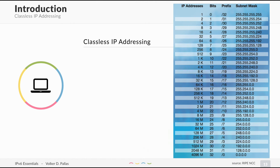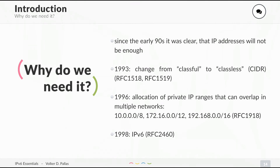Here's an example of IPv4 classless addressing. You can have everything from a slash /32, which is just one single address, to a slash /0, which is the default route because there is not a single bit set for the network mask. Still, why do we need IPv6 if we have classless addressing? Well, since the early 90s, it was clear that IP addresses would not be enough. In 1993 we changed from classful to classless, and in 1996 people realized there were still not enough addresses, because large corporations already had many large blocks.